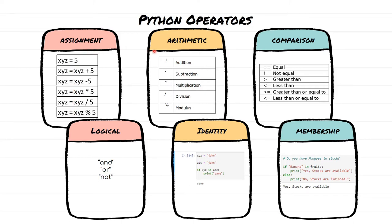Now let's move on to arithmetic operators. Whenever you want to perform any arithmetic operations, you need to make use of arithmetic operators, and this is really very self-explanatory. For addition you use the plus operator, for subtraction you use minus, and similarly for multiplication, division, and modulus you use their corresponding arithmetic operators. We are going to use these whenever we are doing any real-time programming.